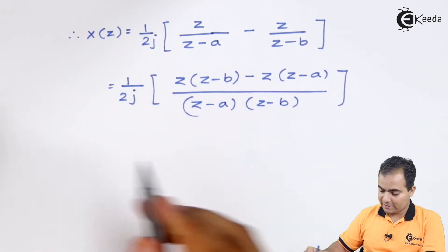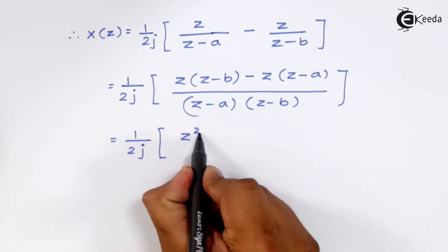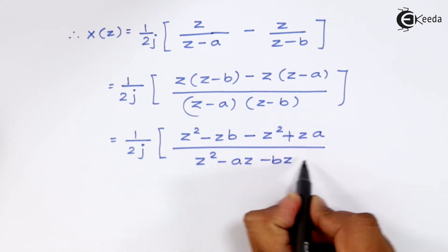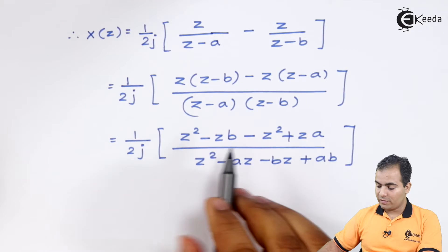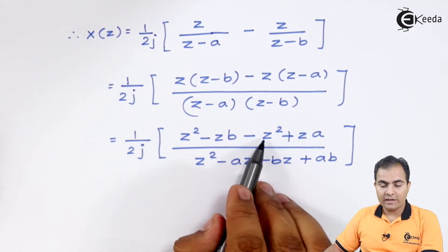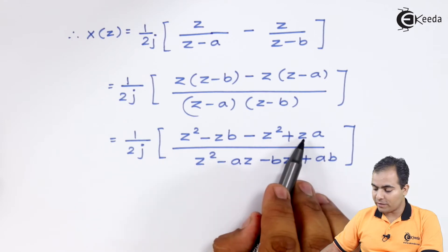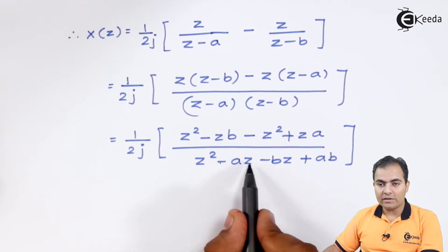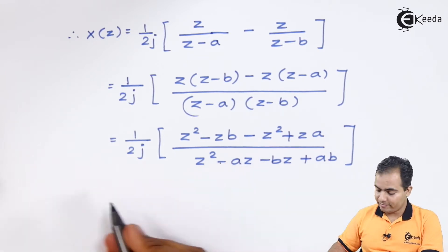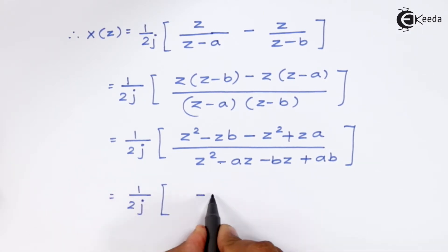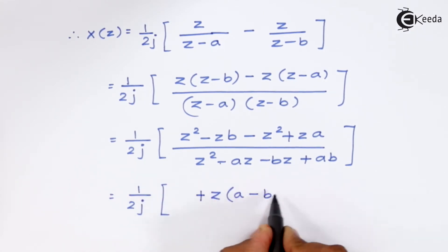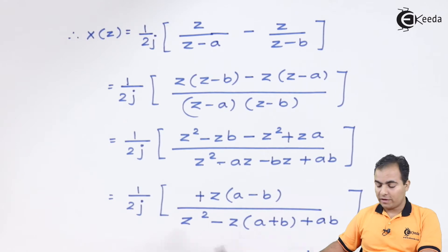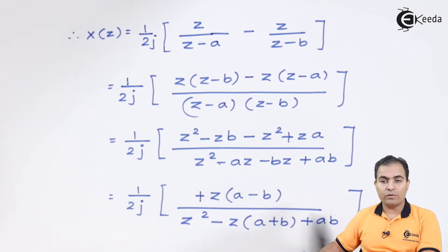After multiplying all the brackets, the z² terms cancel. Taking z common from the numerator gives (a − b), and taking minus z common from part of the denominator gives (a + b). I am now going to resubstitute the values of a and b back into the expression.